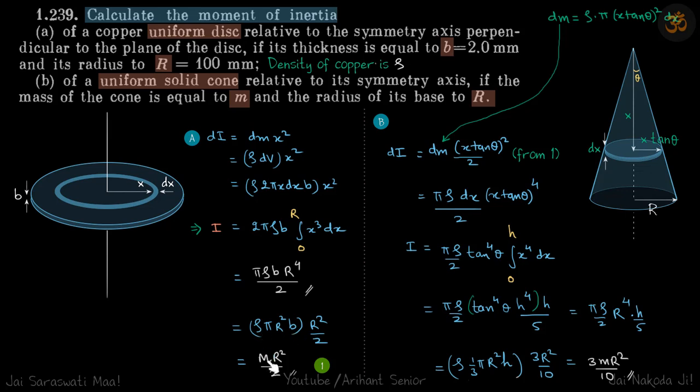Volume times ρ is mass, so the moment of inertia of a disc about its axis is mR²/2.